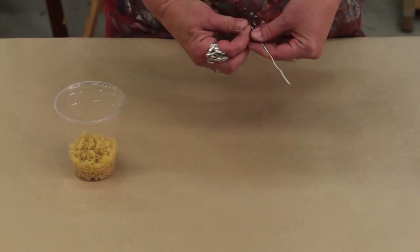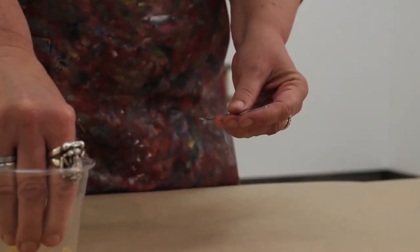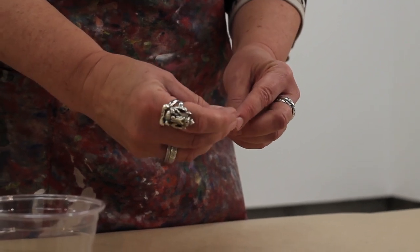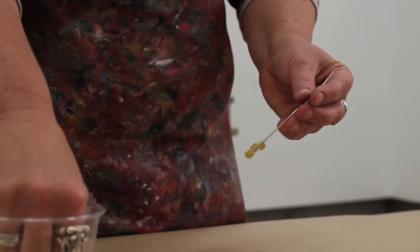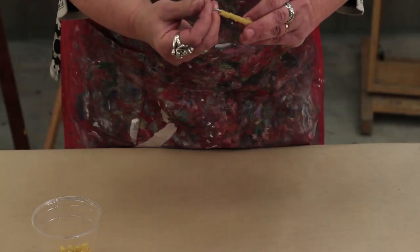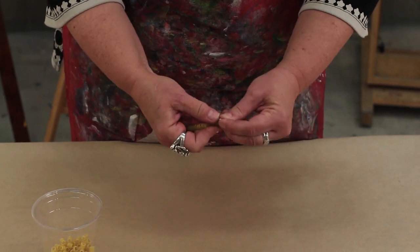For each digit in the tens place, use a shorter piece of wire. Bend a hook at one end of this wire, just like before. String ten macaroni pieces onto the wire. Then, bend a hook at the opposite end to keep the macaroni in place. Repeat the step for as many tens as there are in the three digit number.